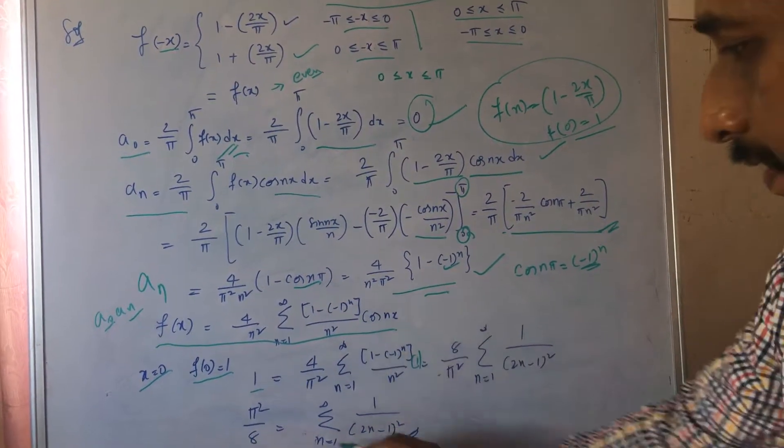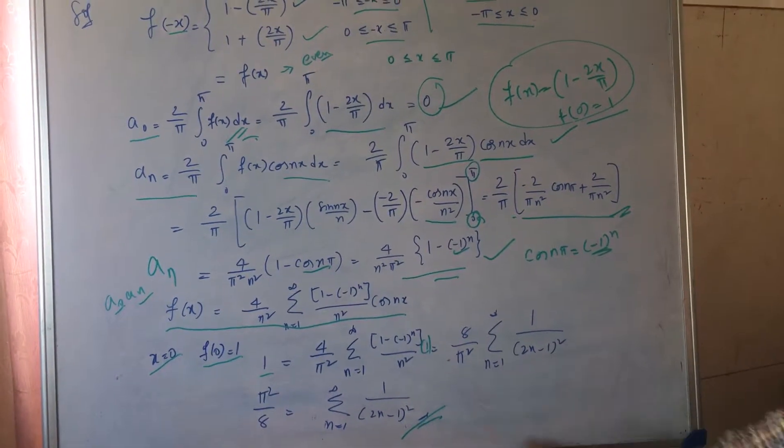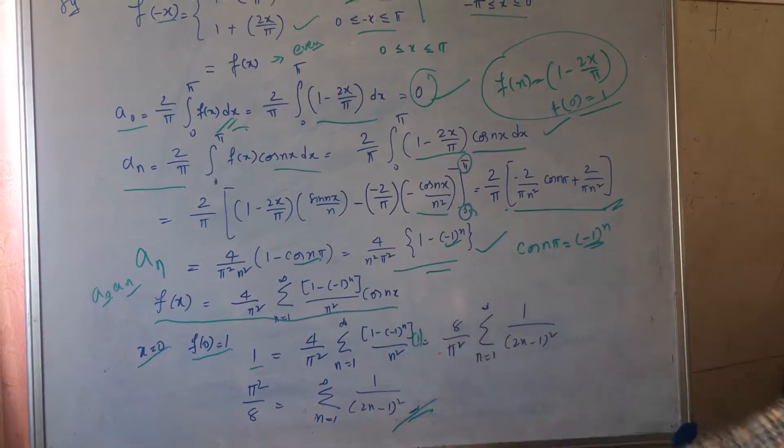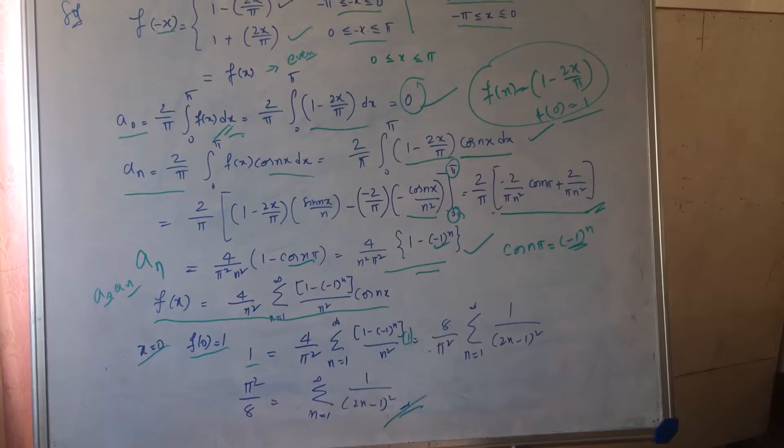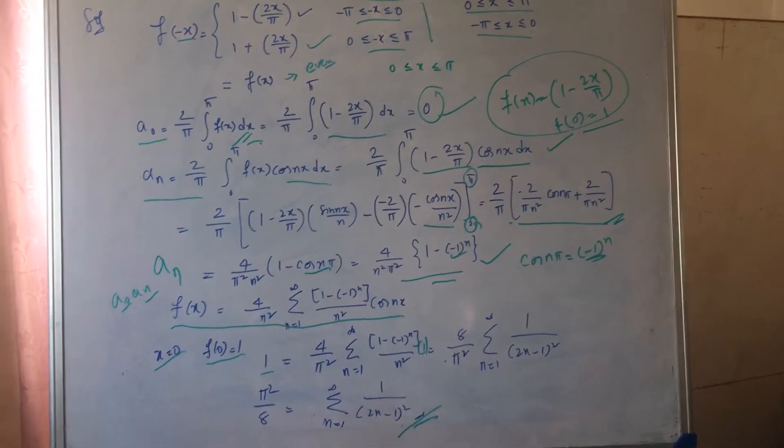This is the result which I get: π² by 8 is equal to sigma n is equal to 1 to infinity 1 by (2n minus 1) whole square.